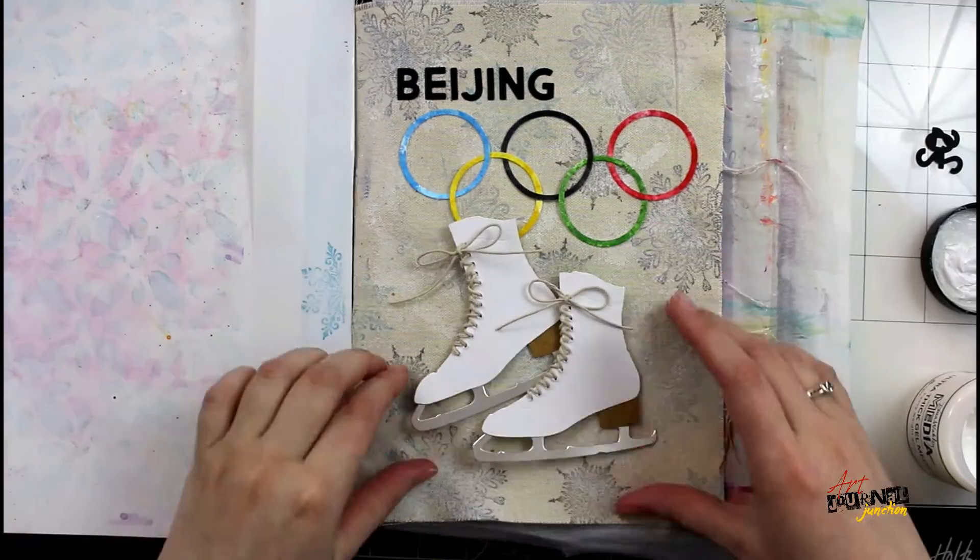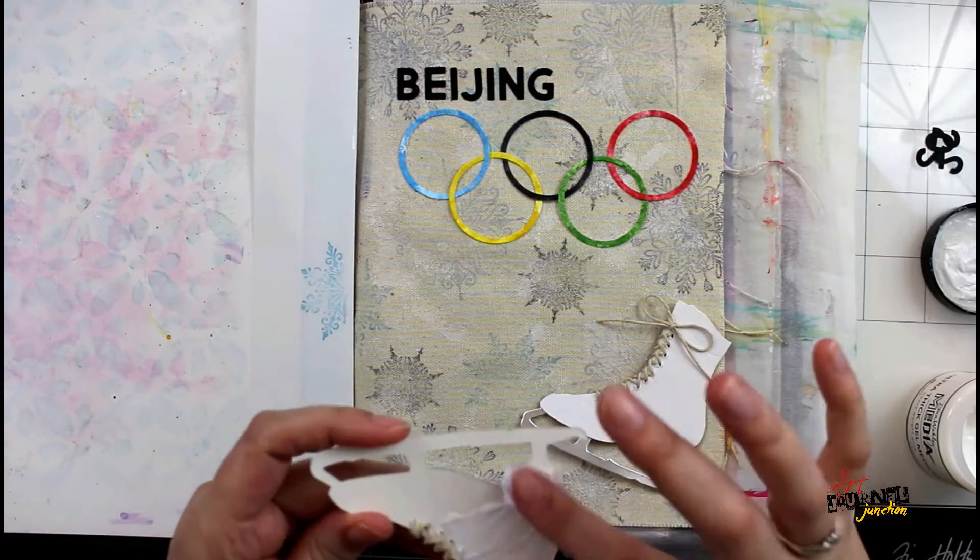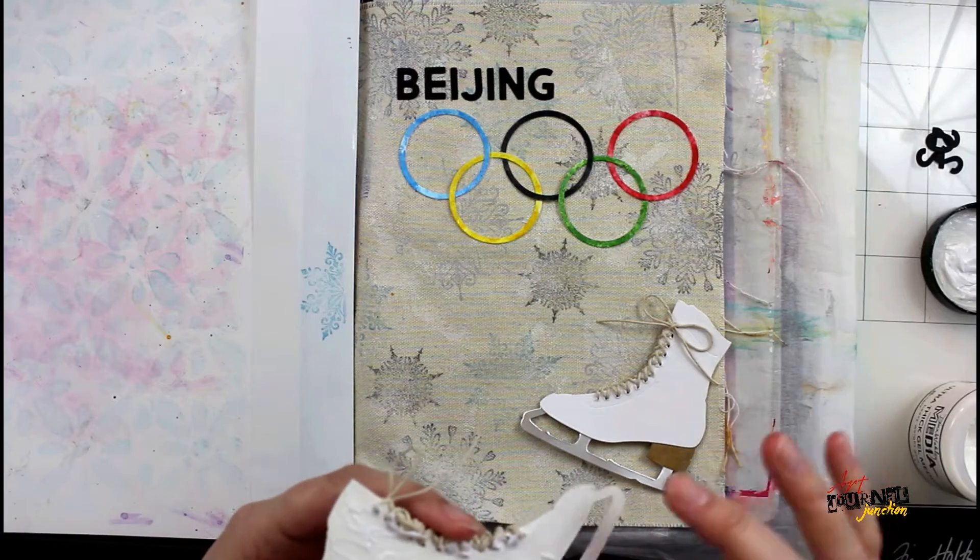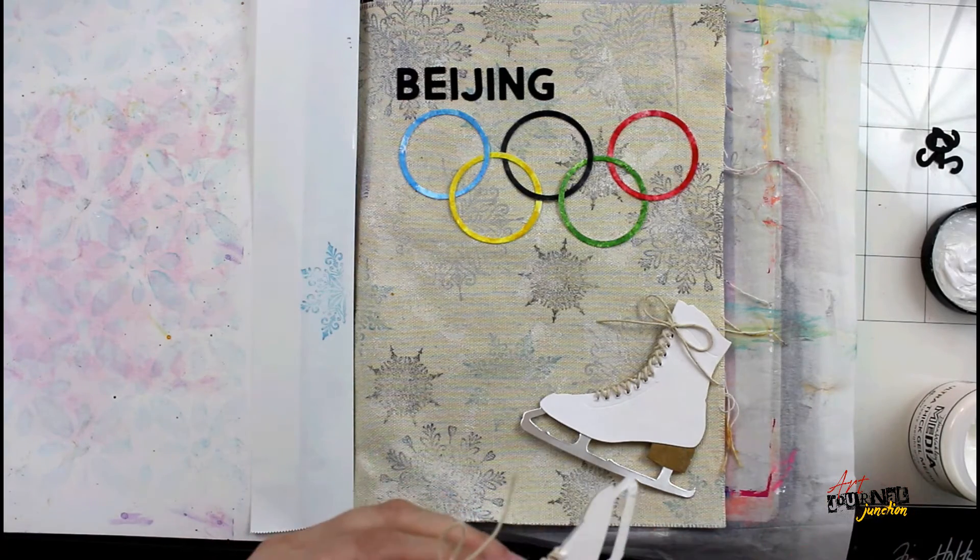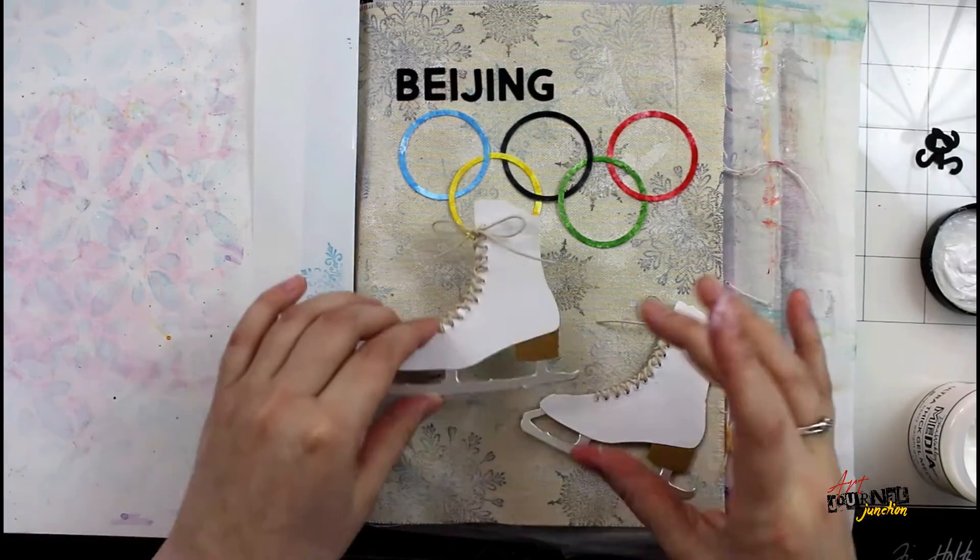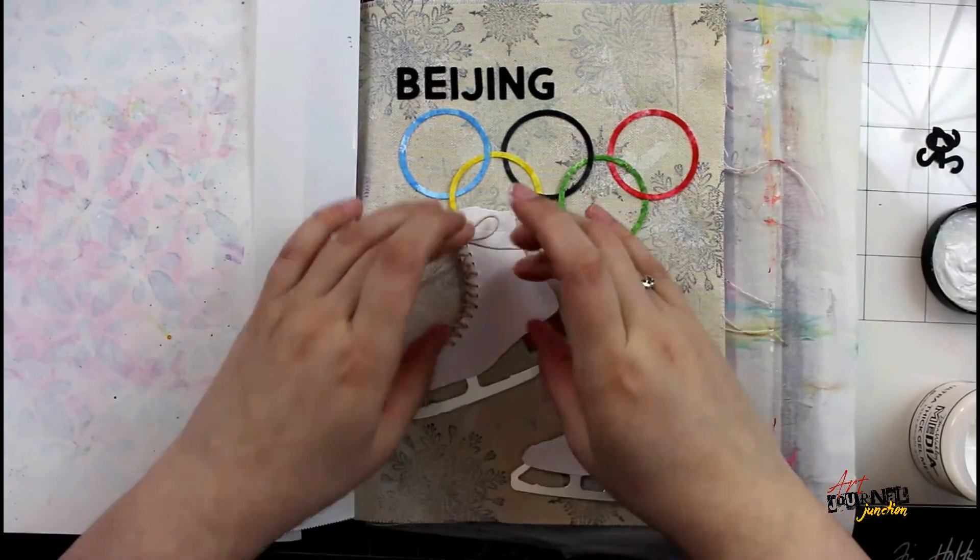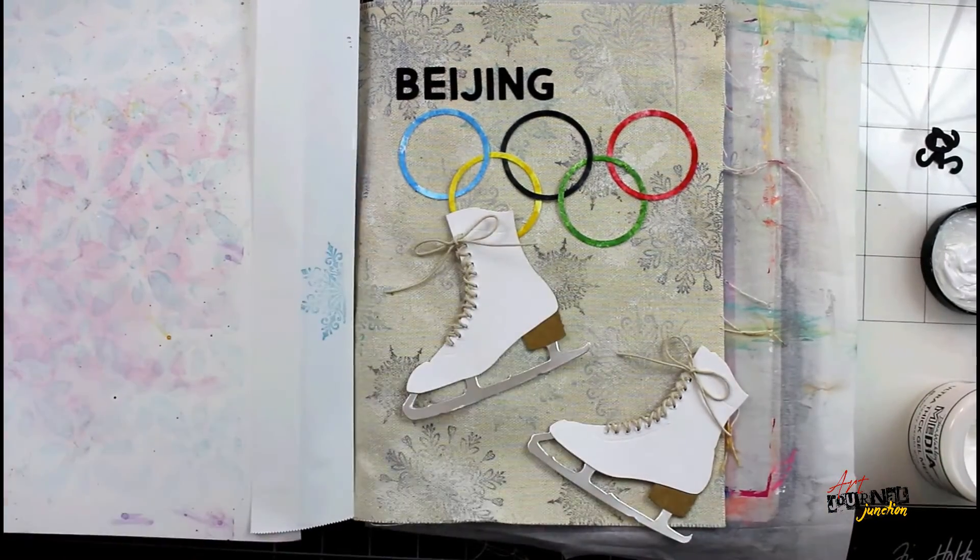And then I'm going to glue everything down on this page with Dina Wakley Media Ultra Thick gel. That is because this is a canvas page and a lot of these paper pieces are heavier weight and I want them to be permanently adhered onto the canvas page. So the first thing I did was glue down all the Olympic rings.